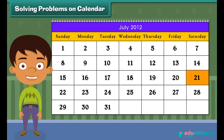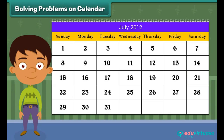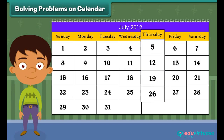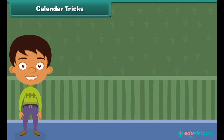Is the 21st a Sunday? No, it is not a Sunday — it is a Saturday. How many Thursdays are there in this month? There are 4 Thursdays in this month.